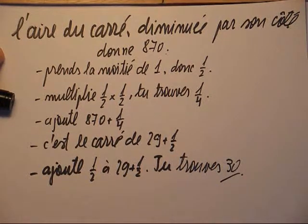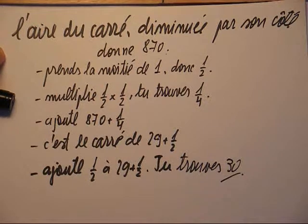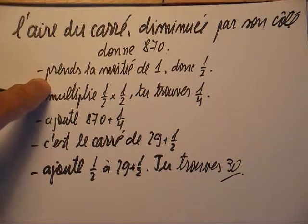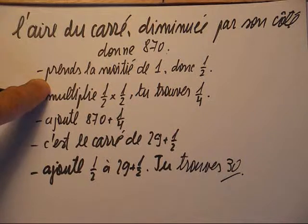On trouve donc l'énoncé suivant. L'aire du carré diminué par son côté donne 870. La solution: c'est prendre la moitié de 1, donc 1 demi.